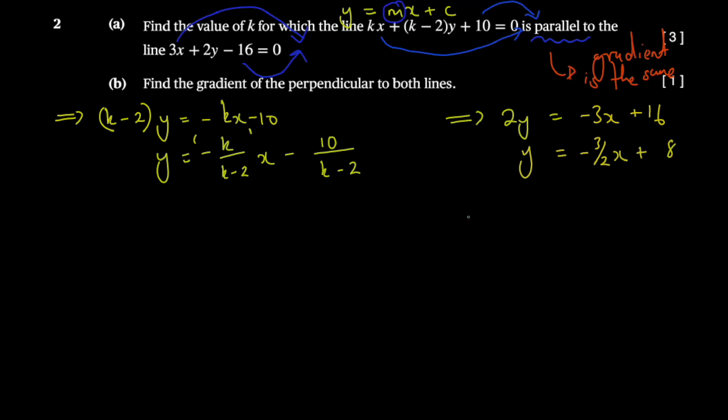Now, equating the gradients, you have -k/(k - 2) = -3/2. You're taking these gradients here. You can actually show them that this is the gradient, this is the gradient.